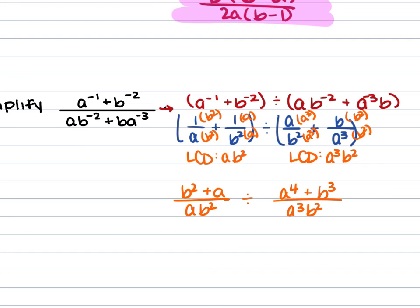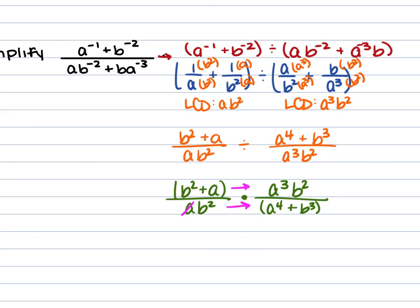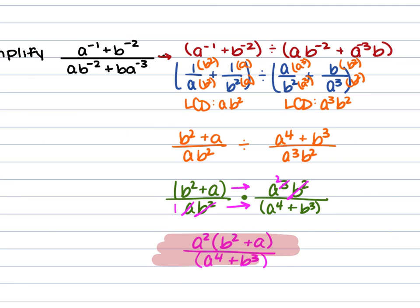From here, if you can factor, factor — but you can't, so keep, change, flip. The first fraction stays as (b squared plus a)/(ab squared). Change to multiplication and flip the second fraction: (a cubed b squared)/(a to the 4th plus b cubed). Cross-simplify: the a and a cubed become a squared, and the b squared and b squared cancel diagonally. This leaves (b squared plus a) times a squared, all over a to the 4th plus b cubed. You can keep this in factored form.